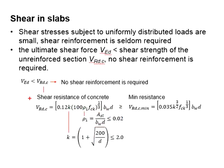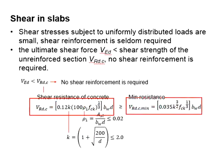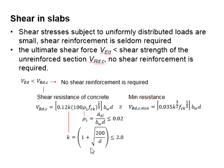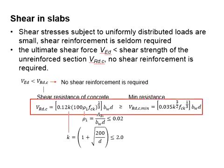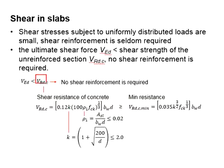The shear resistance of the concrete should always be greater than the minimum resistance of the concrete. Therefore, a larger value of these two is selected to represent the shear resistance of the concrete. It is to be checked with the shear load.